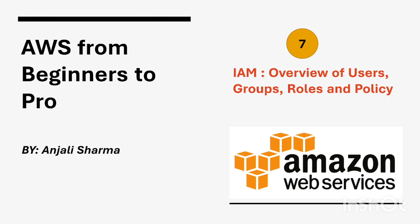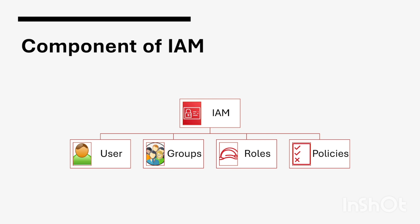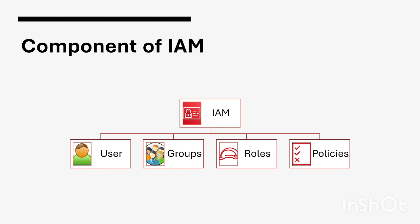Hello everyone and welcome back to my channel. In this video we are going to have an overview of users, groups, roles, and policies, which are very important components of IAM. The introduction of IAM we have already covered in video number six. Users, groups, and roles are very important parts of IAM for authorization and authentication, and with the help of policies we can assign permissions.